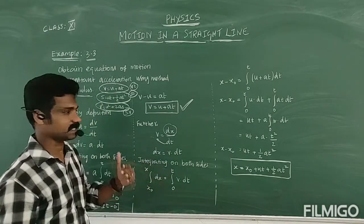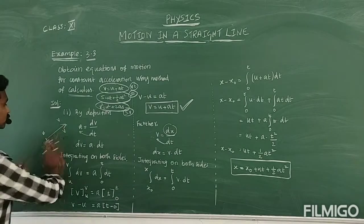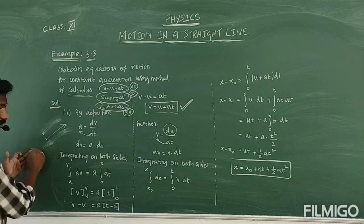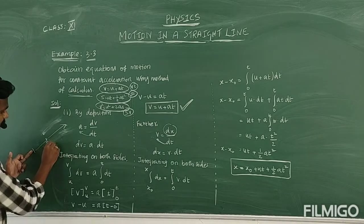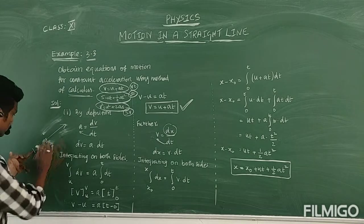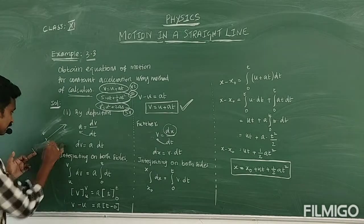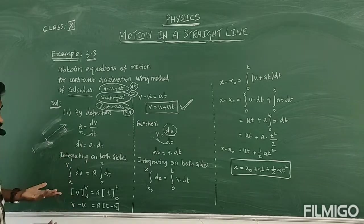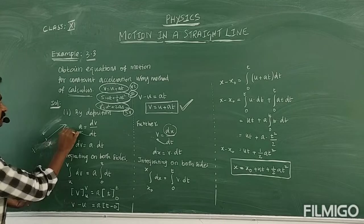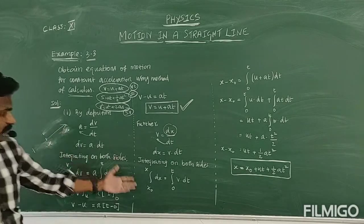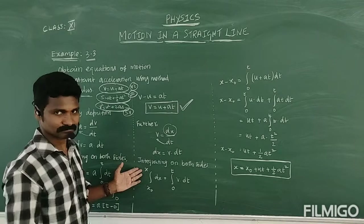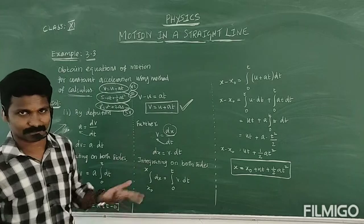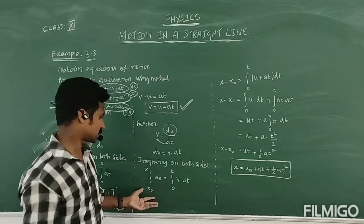Position means the displacement from here to here — it has changed. The origin may be at some point, and the current position is X or S. We write the limits as X₀ to X for position, and 0 to T for time.